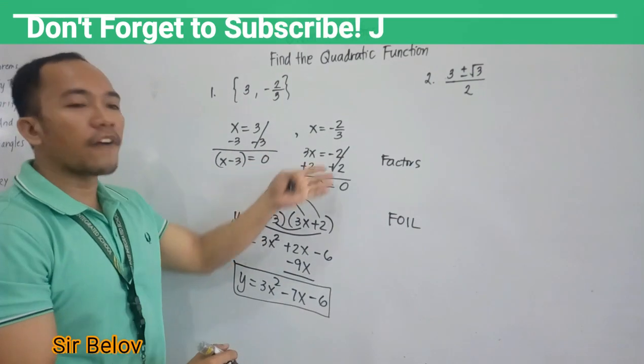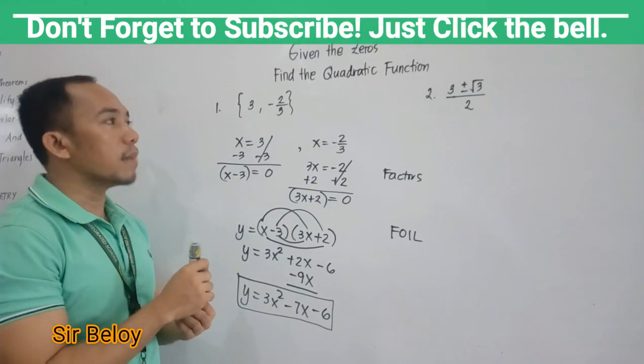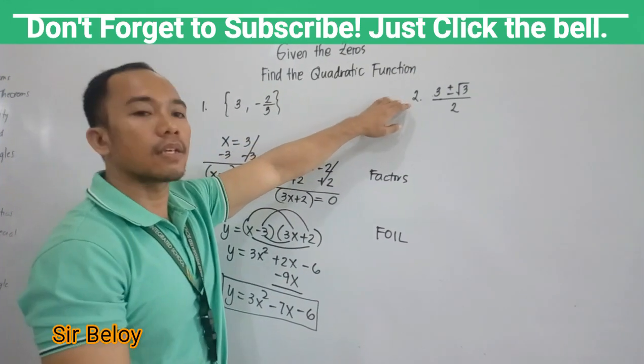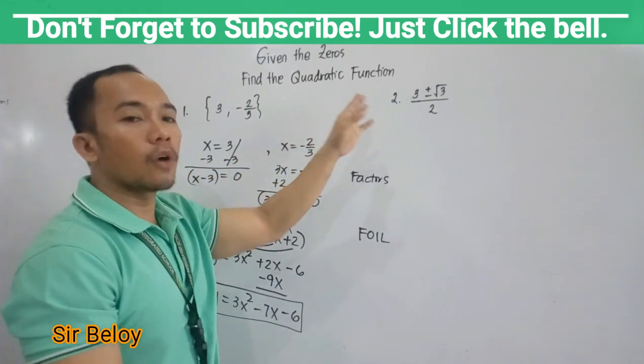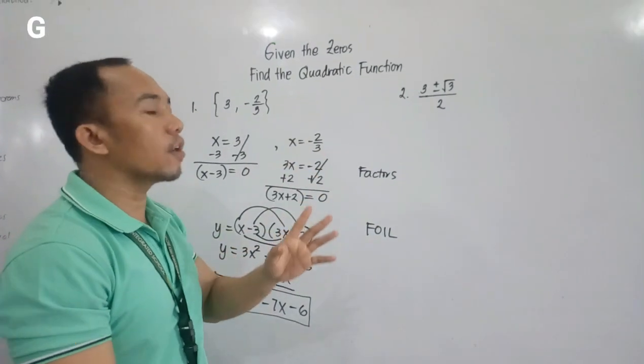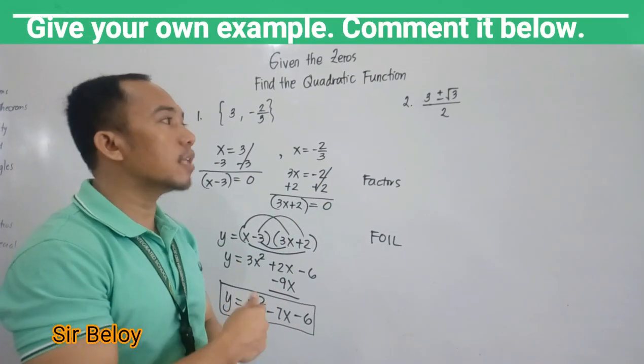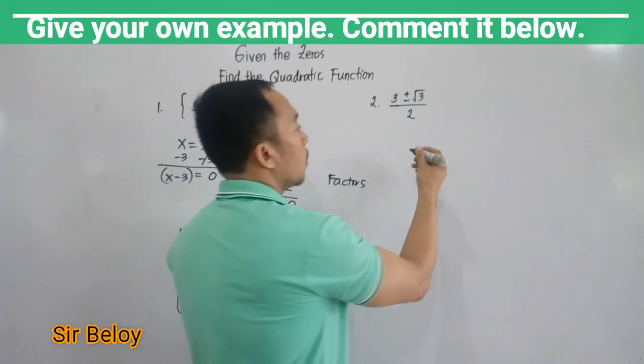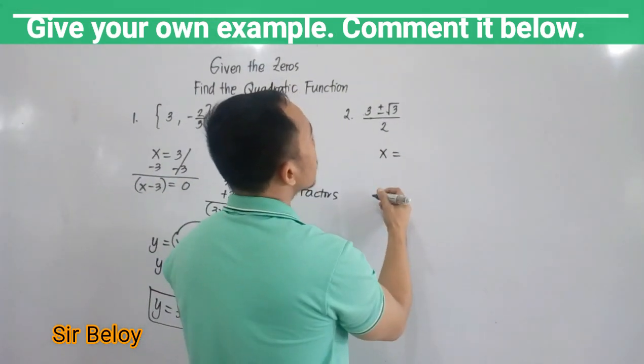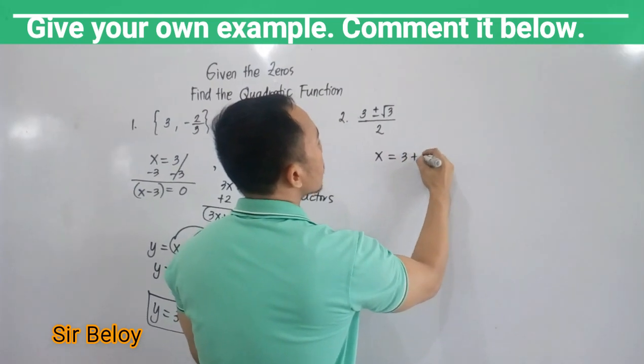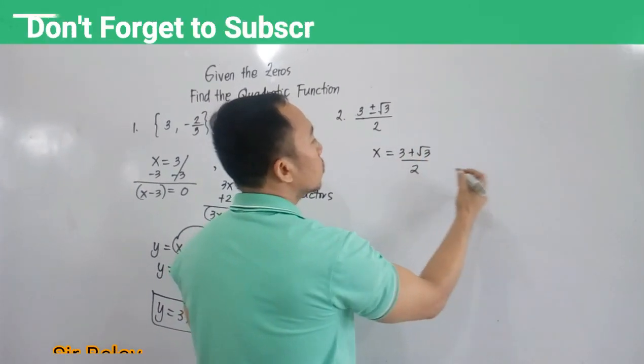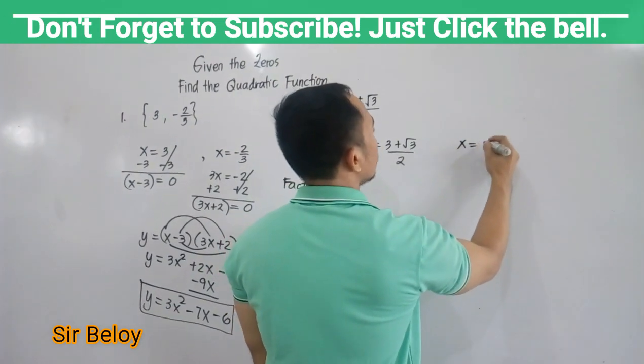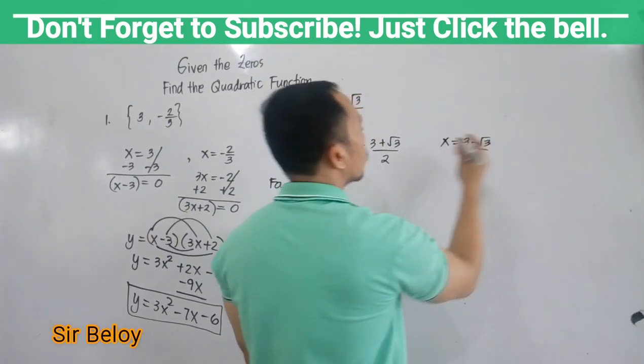So we use the factors and FOIL method. What about if your example is like this? We have radicals. So we will use a different method. We will use the sum and the product of the roots or zeros. So the first zero is (3 plus square root of 3) over 2.